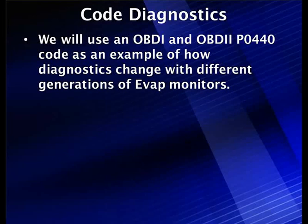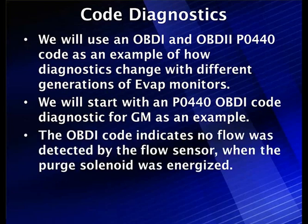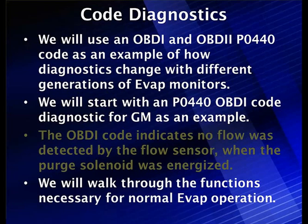Let's talk about our introduction to code diagnostics. We're going to use an OBD-1 and an OBD-2 code for P0440. It's an example of how the diagnostics changed slightly with EVAP monitors and different generations of EVAP. We'll start with this code 440 OBD-1 example from GM. This code indicates no flow was detected by the flow sensor when the purge solenoid was energized. We're going to walk through these functions to show what's necessary for normal EVAP operation.